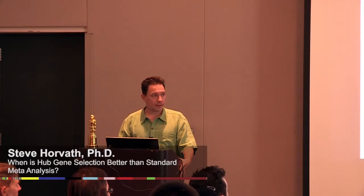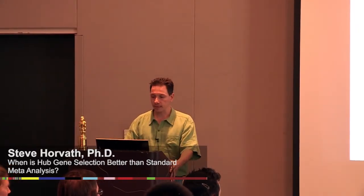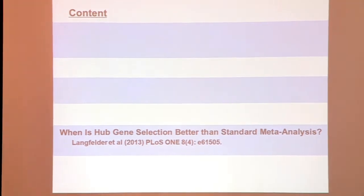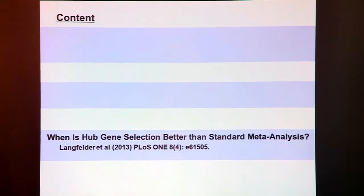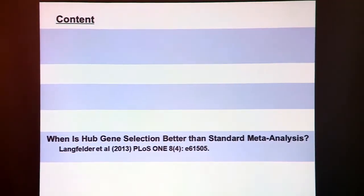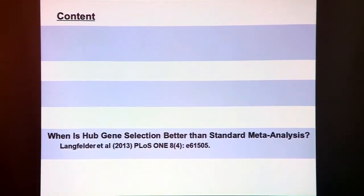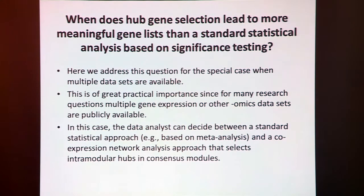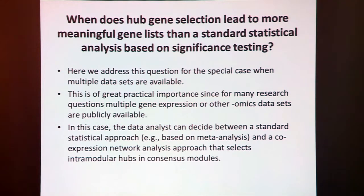All right, I think let us continue now with a topic that builds on these findings. This is when is hub gene selection better than standard meta-analysis, and that's another first author paper from Peter Langfelder.